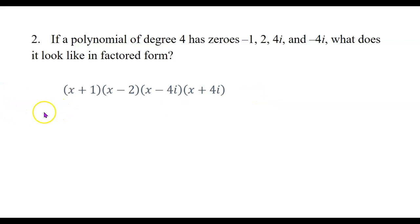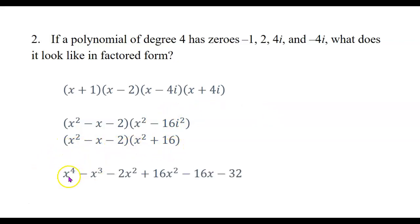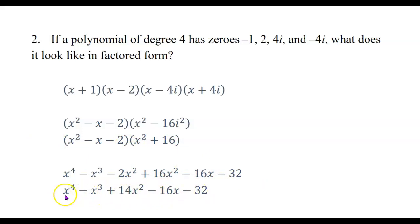If we go ahead and multiply this out, we can use FOIL to multiply the first two factors together, and multiply the last two factors together. Remember that i squared equals negative 1, so instead of writing minus 16i squared, we write plus 16. Then multiplying the resulting polynomials: x squared times x squared is x to the fourth; minus x times x squared is minus x cubed; minus 16x; minus 2x squared plus 16x squared; minus 32. After combining like terms, the expanded form is x to the fourth minus x cubed plus 14x squared minus 16x minus 32.